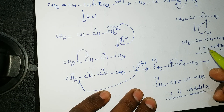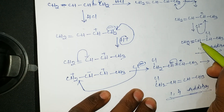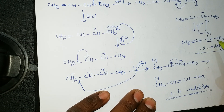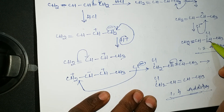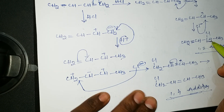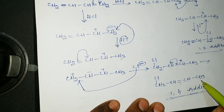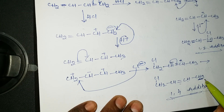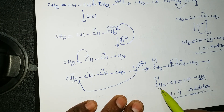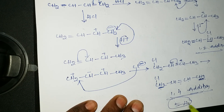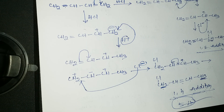In the 1,2 addition reaction, there is only one hyperconjugation — only one hyperconjugate hydrogen next to the double-bonded carbon. In the 1,4 addition reaction, the carbon next to the double bond has three hydrogens on one side and two hydrogens on the other side — a total of five hyperconjugate hydrogens. That is why 1,4 addition is more stable than 1,2 addition.